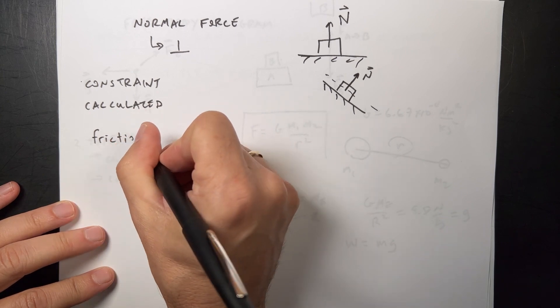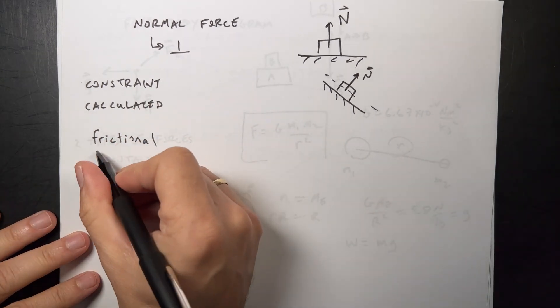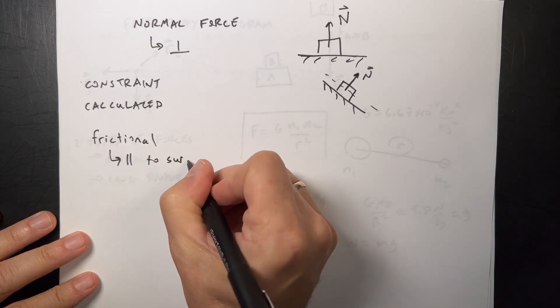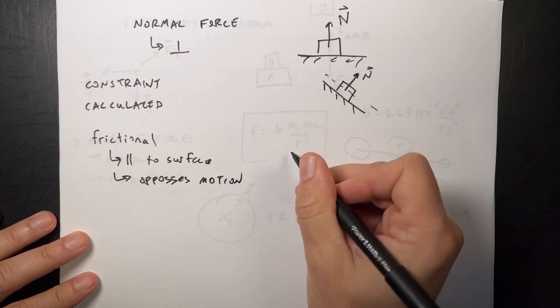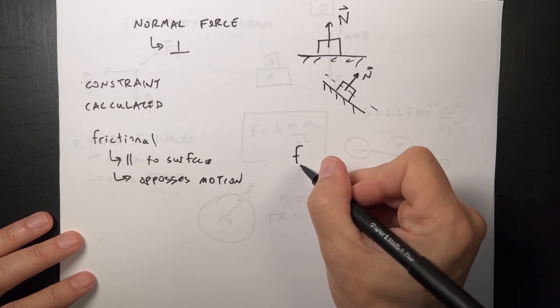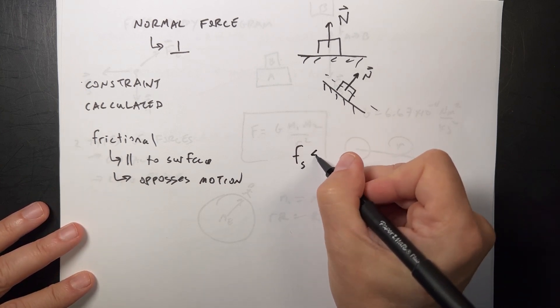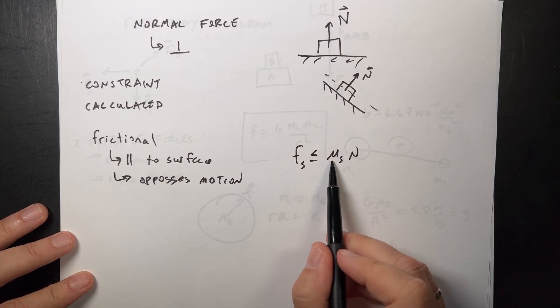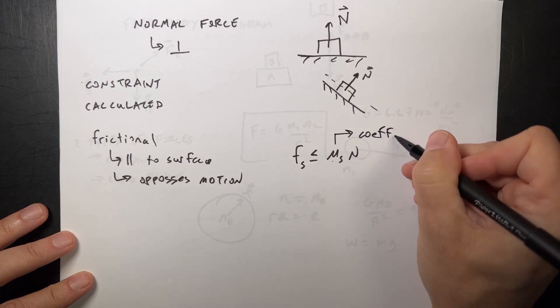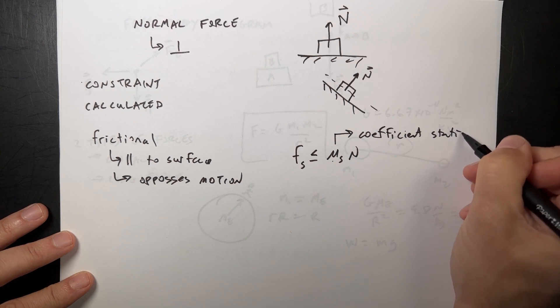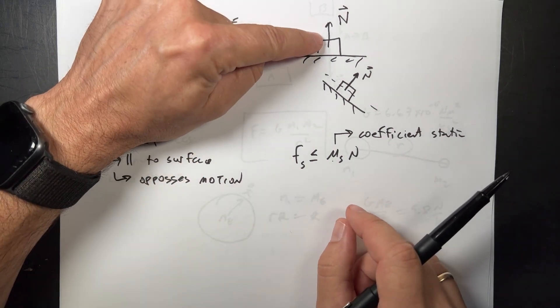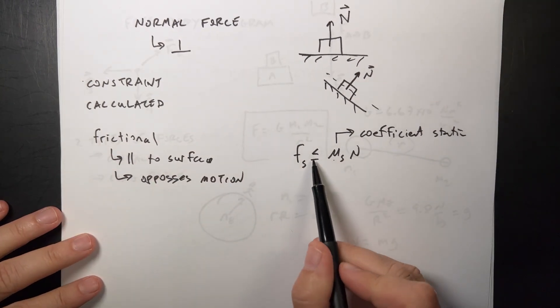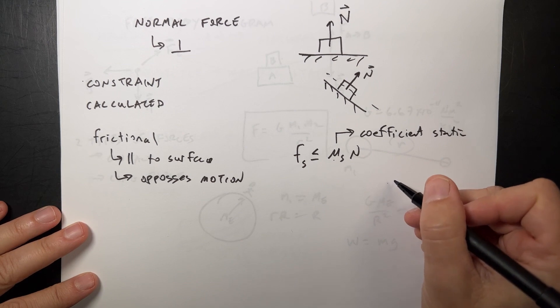The next force is the frictional force. There's actually two types. This is mostly a constraint force. This is the force that's parallel to surface and opposes the motion. If it's not sliding, we call this Fs less than or equal to μs times N. This is the coefficient of static friction. It's a coefficient that depends on the two types of materials that are interacting - wood and steel, rubber and asphalt, whatever.